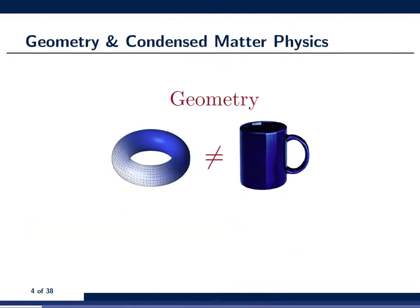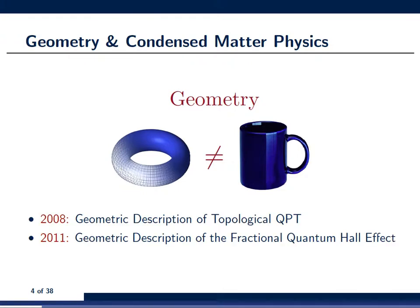What I am trying to argue in this talk is that there may not only be a close relationship between topology and condensed matter physics, but also between geometry and condensed matter physics. There has already been some past research in this field. For example, in 2008 Zanardi and Castelnuovo used a metric tensor to detect the topological phase transition at zero temperature, and in 2011 Duncan Haldane proposed a geometric view of looking at the fractional quantum Hall effect.